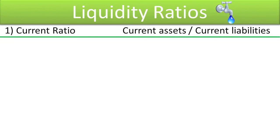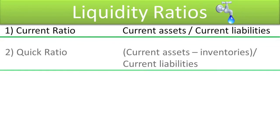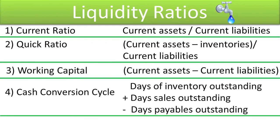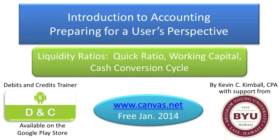In summary, the following liquidity ratios can help users assess a company's liquidity — its ability to pay its current liabilities within the next year as they come due. To assist you in assessing a company's liquidity, you should learn the names, computations, and interpretations of all these ratios. That's it for our liquidity ratios: Quick Ratio, Working Capital, and Cash Conversion Cycle. Good luck on the quiz.